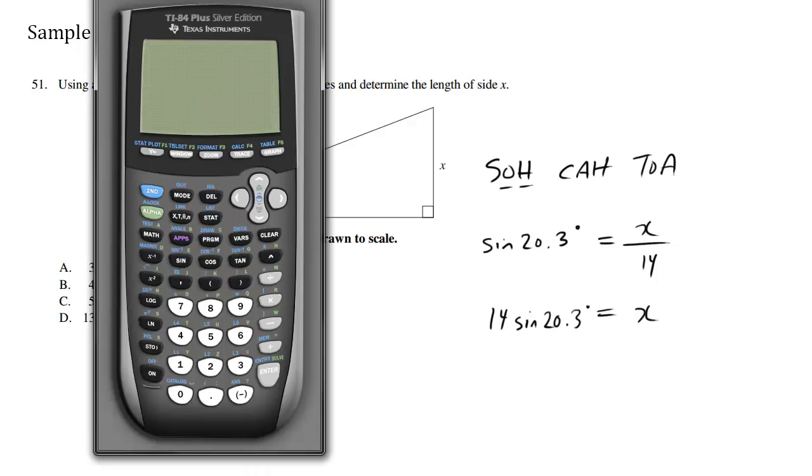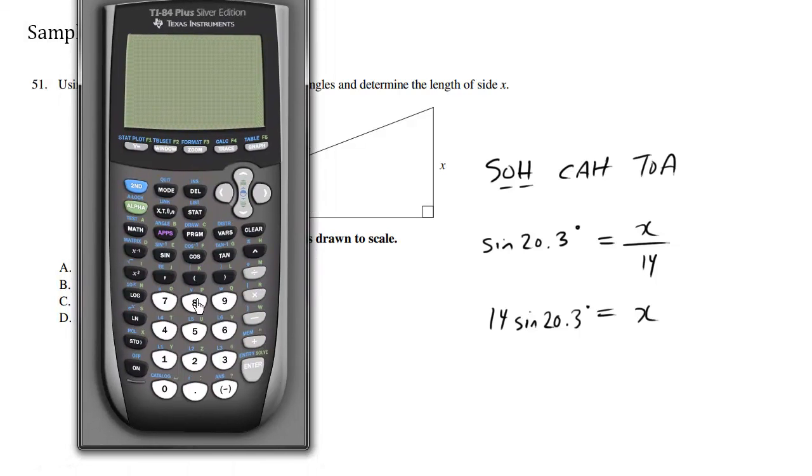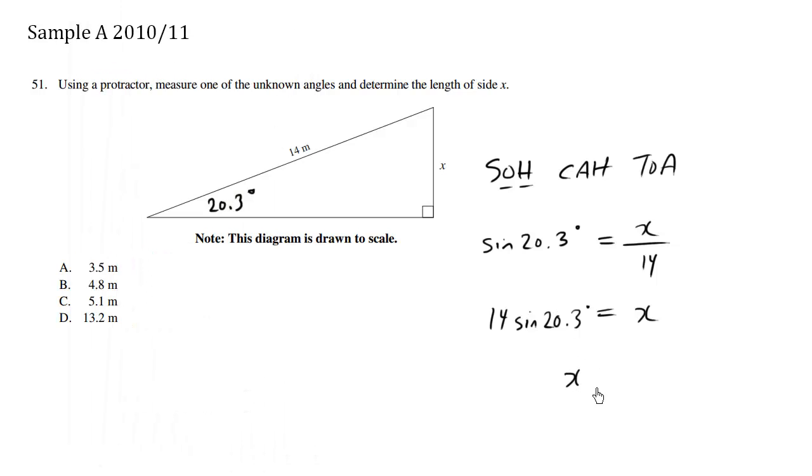Make sure your calculator is in degree mode, not radian mode. Make sure you know how to switch back and forth between these modes. So 14 sine 20.3, enter, is approximately equals to 4.86. So x here is approximately equals to 4.86 meters.